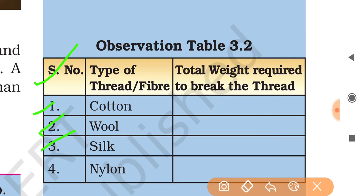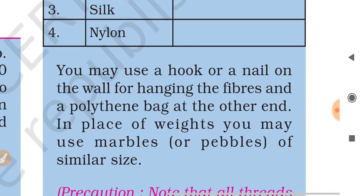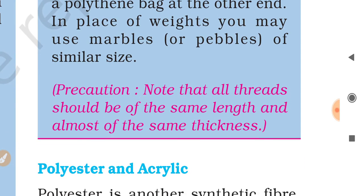Cotton, wool, silk, nylon — you have to calculate the weight at which each thread or fiber breaks, then arrange them according to their strength. You may use a hook or nail for hanging the fibers and a polythene bag at the outer end. In place of weights, you may use marbles or pebbles of smaller size. Precaution: all threads should be the same length and almost the same thickness, so that it will be a valid test.